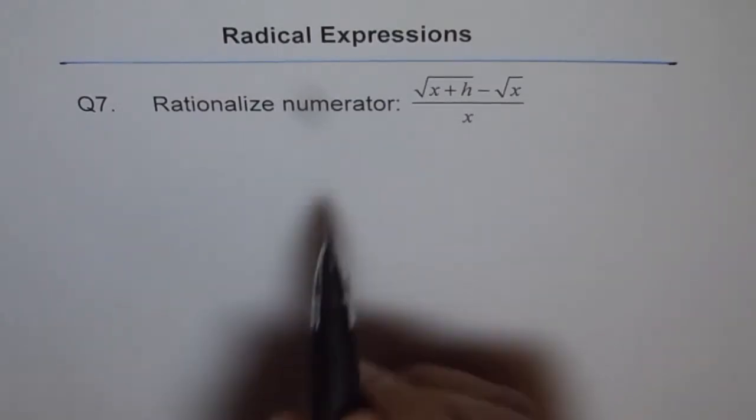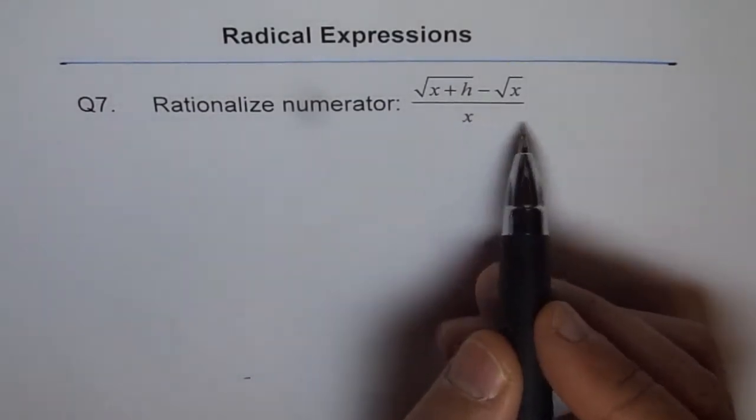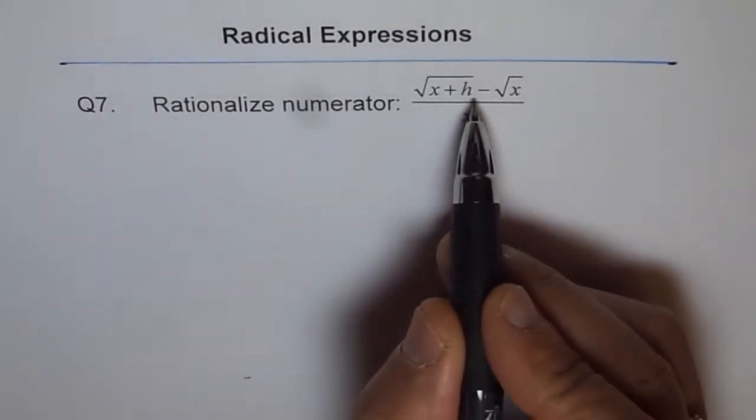Let's rationalize the numerator. What does it mean? It really means to multiply and divide by the conjugate of the numerator.